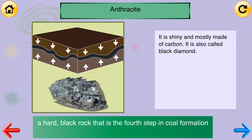Anthracite. A hard, black rock that is the fourth step in coal formation. It is shiny and mostly made of carbon. It is also called black diamond.